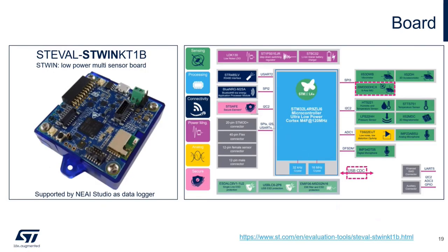What is our target board — our hardware? It is the ST-EVAL STWIN KT1B board. You can consider this board as a kind of sensor hub, having a low-power microcontroller, Cortex-M4 based. There is a quite rich set of sensors: three different types of accelerometers — the wideband one, low-power one, and the generic one. We will use the generic one: ISM330DHCX, having both accelerometer and gyroscope.